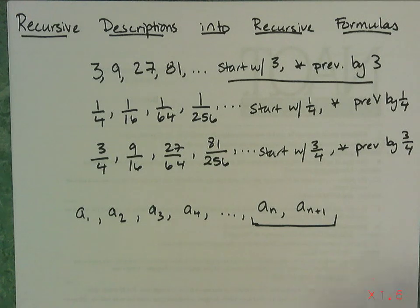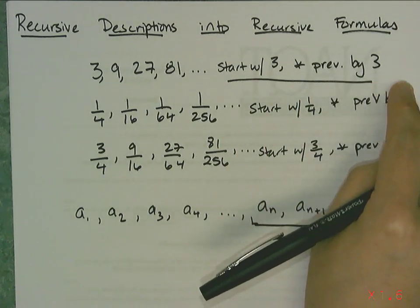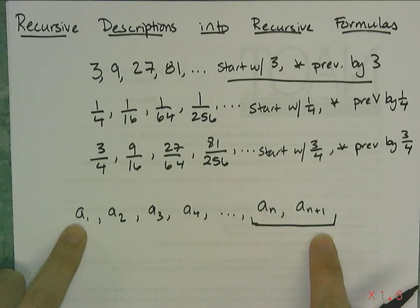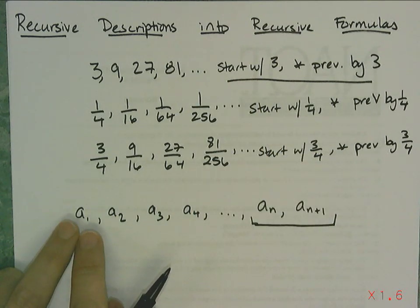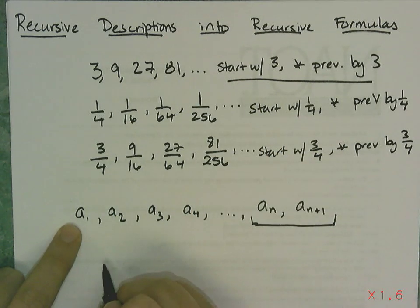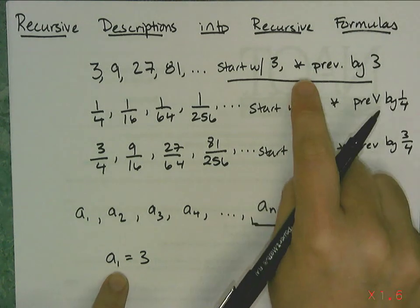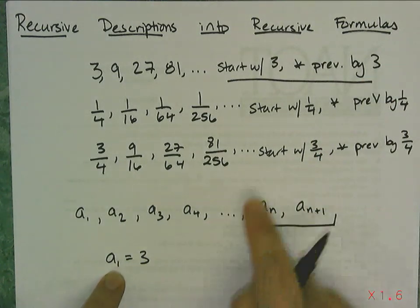I'm going to literally translate start with 3, multiply previous by 3, into a formula using this notation for sequences. When I say start with 3, that means a₁, the very first term, needs to be 3. So I simply write a₁ = 3. This tells the person, whoever's looking at my rule, that the first term is 3. Now I have to write this multiply previous by 3, or the procedure using this notation.